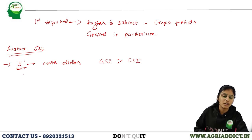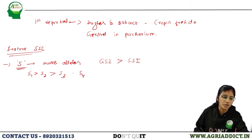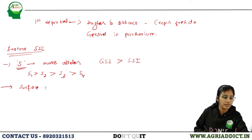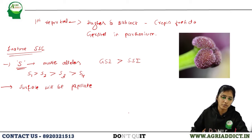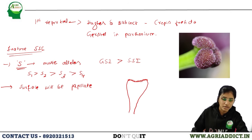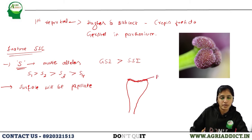For illustration, let's take four alleles: S1, S2, S3, and S4, with dominance order S1 > S2 > S3 > S4. The stigma surface in sporophytic self-incompatibility is papillate — it has small hair-like projections covered by a pellicle or cuticular wax.